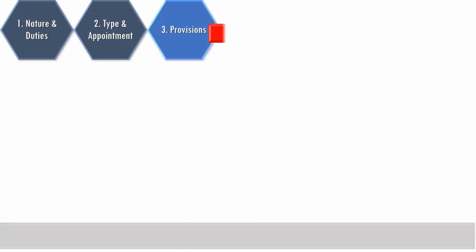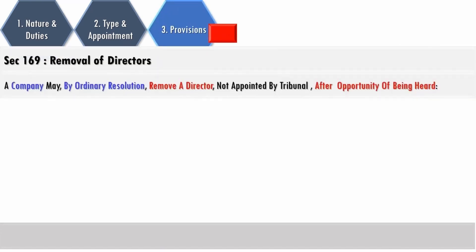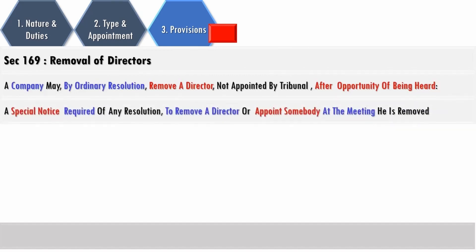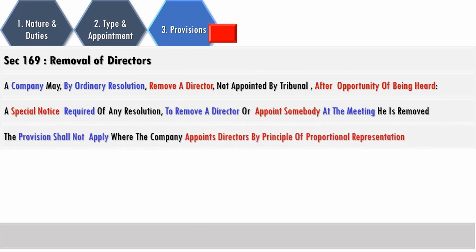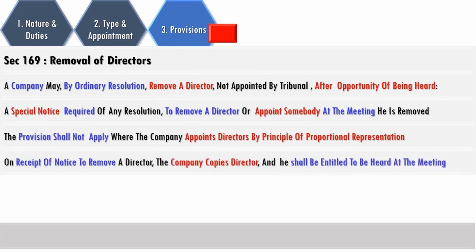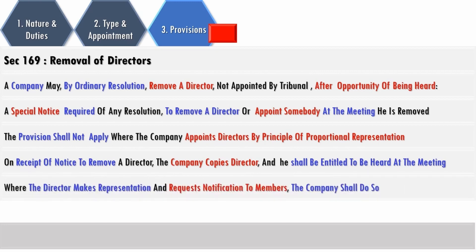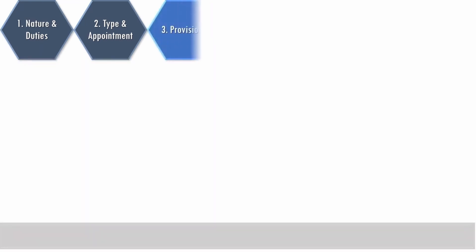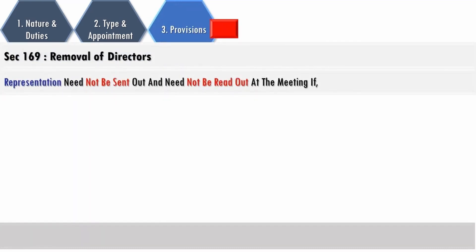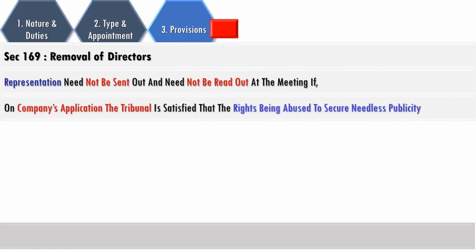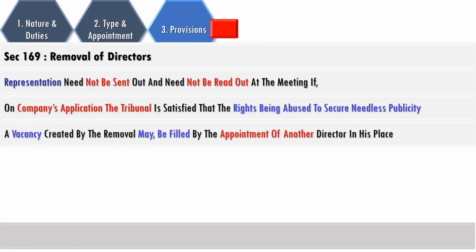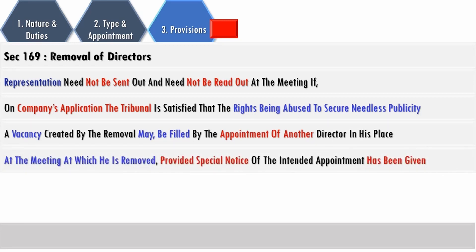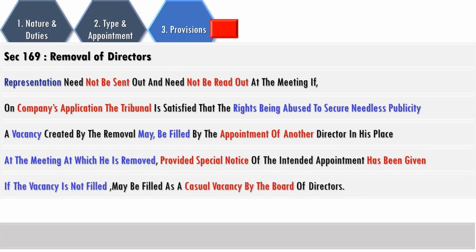Pursuant to Section 169, a director may be removed by ordinary resolution after giving an opportunity of being heard. A special notice is required to remove a director or appoint somebody at the meeting at which they are removed. This provision does not apply in respect of directors appointed by the principle of proportionate representation. On receipt of notice to remove the director, the company notifies the director and they shall be entitled to be heard at the meeting. Where the director makes a representation and requests notification to members, the company shall do so. If the copy is not sent, the director may require their representation to be read out at the meeting. If the company approaches the tribunal stating that circulation is being used for getting undue publicity and the tribunal accepts the company's view, the representation need not be sent nor read out. A vacancy created by removal may be filled by appointing another person, provided special notice has been given, else it can be filled as a casual vacancy; the new incumbent will hold office until the residual tenure of their predecessor.